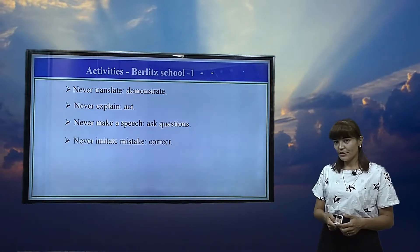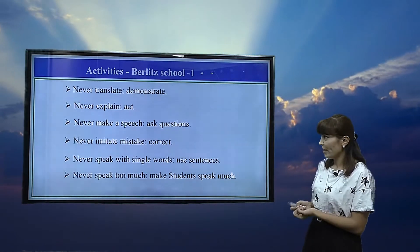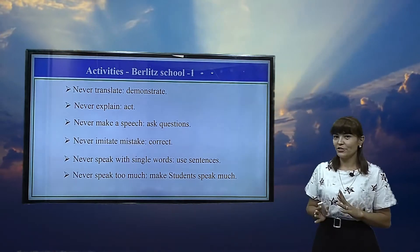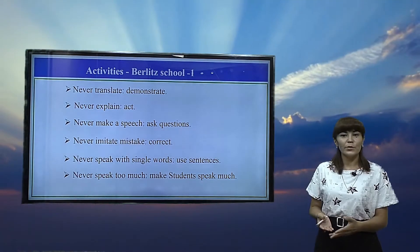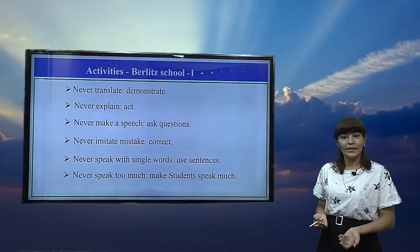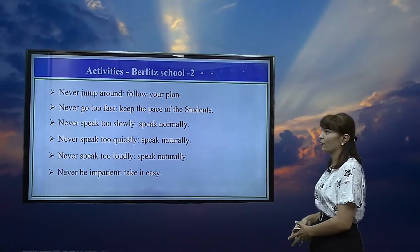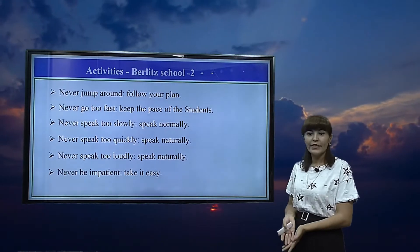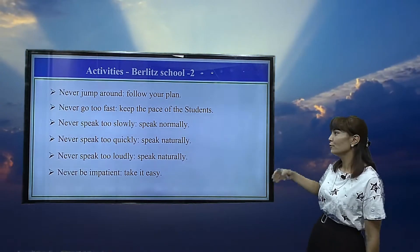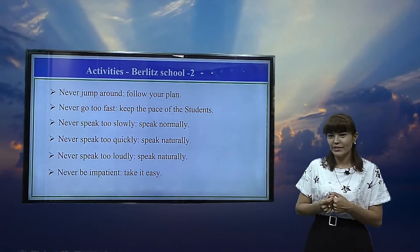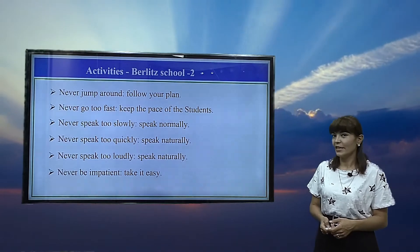The activities of the direct method include the following guidelines: never translate, but demonstrate; never explain, just act; never make a speech, just ask questions; never imitate mistakes, just try to correct; never speak with single words, use sentences; never speak too much, make the students speak much. Additionally: never jump around, just follow your plan; never go too fast, keep the pace of the students; never speak too slowly, speak normally; never speak too quickly, speak naturally; never speak too loudly, speak naturally; and never be impatient, take it easy.